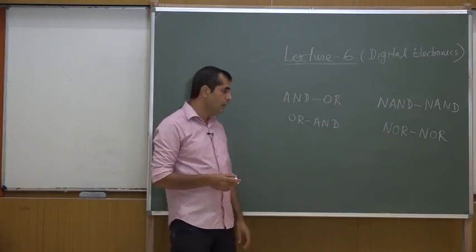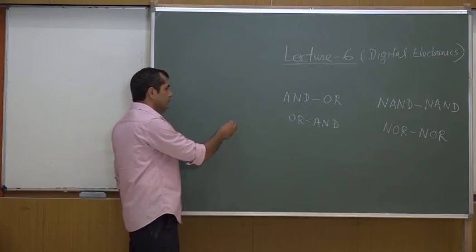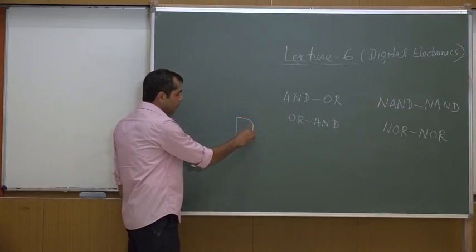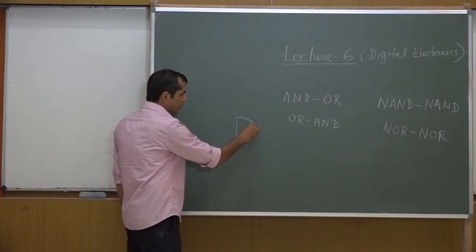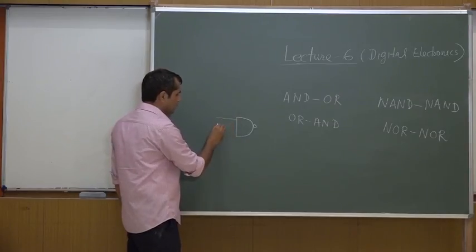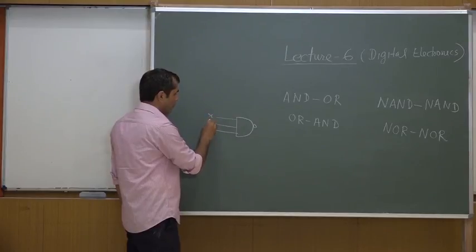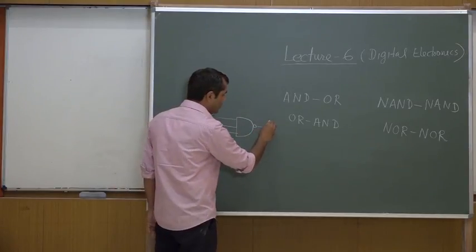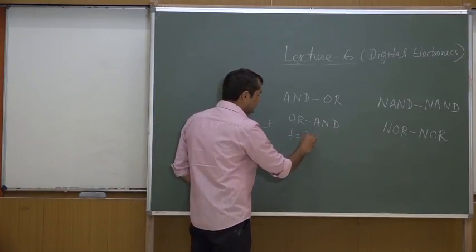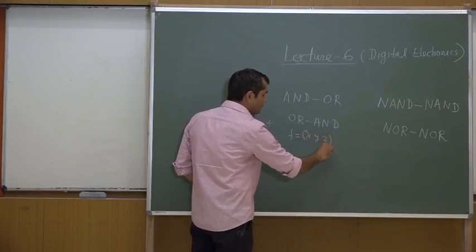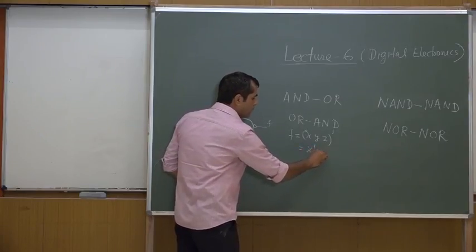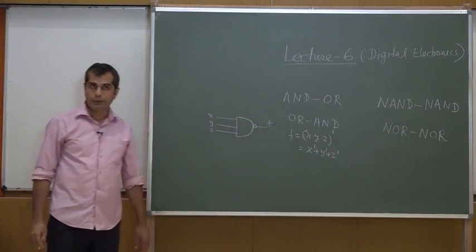You are familiar with different kinds of logic gates — you know about the NAND gate. Let us say we have a three-input NAND gate with this symbol. If I take three inputs X, Y, and Z, with output F, then F can be written as (XYZ)' or equivalently X' + Y' + Z' by De Morgan's law.